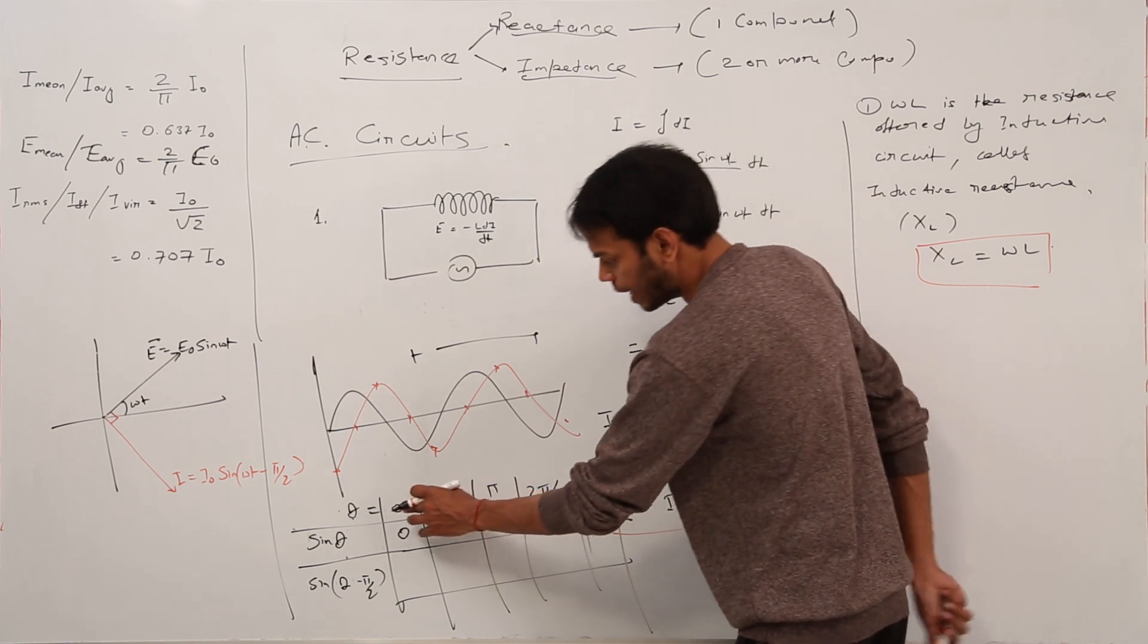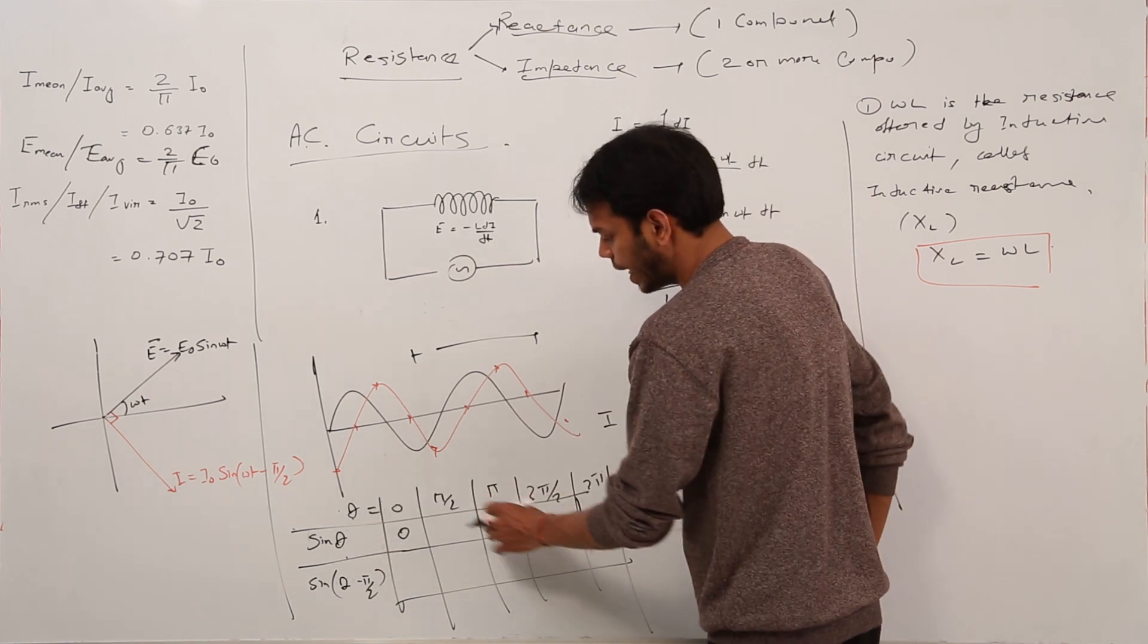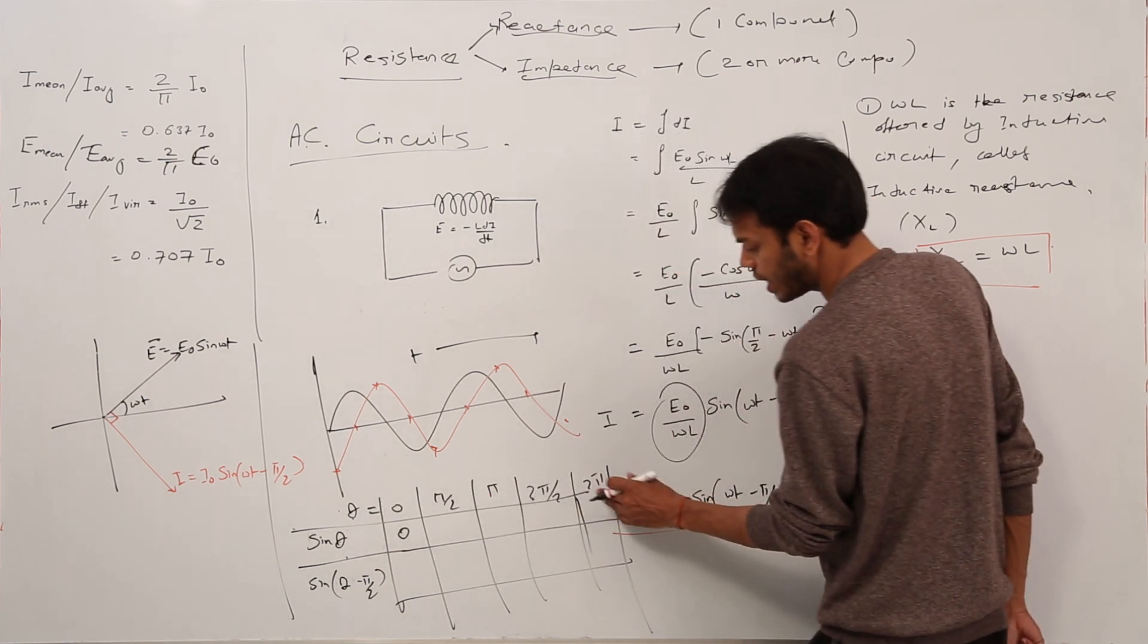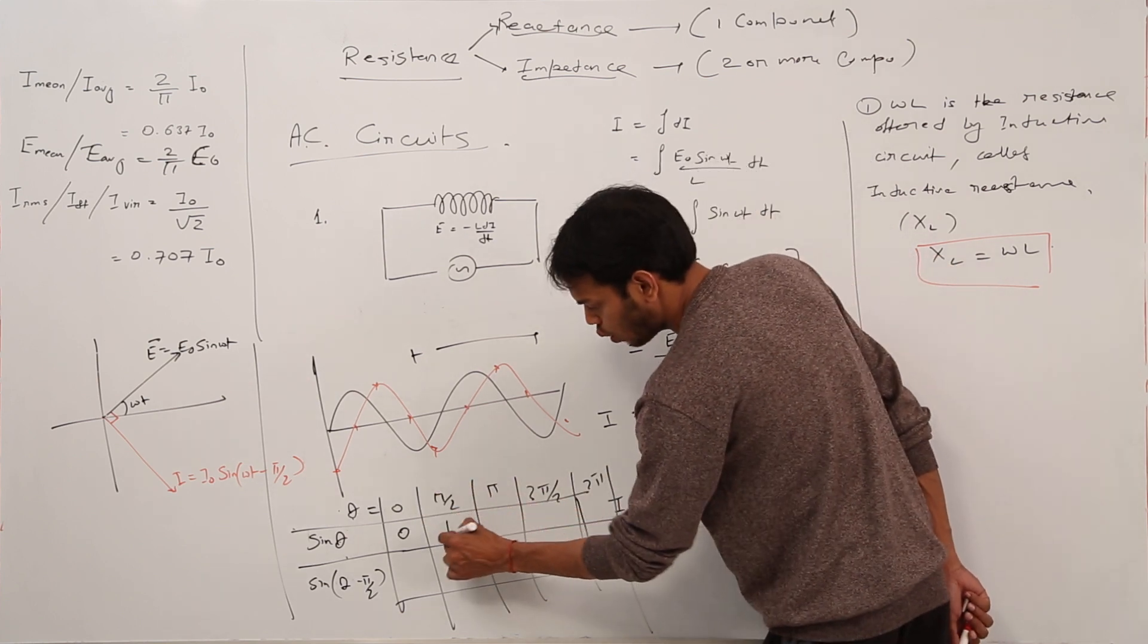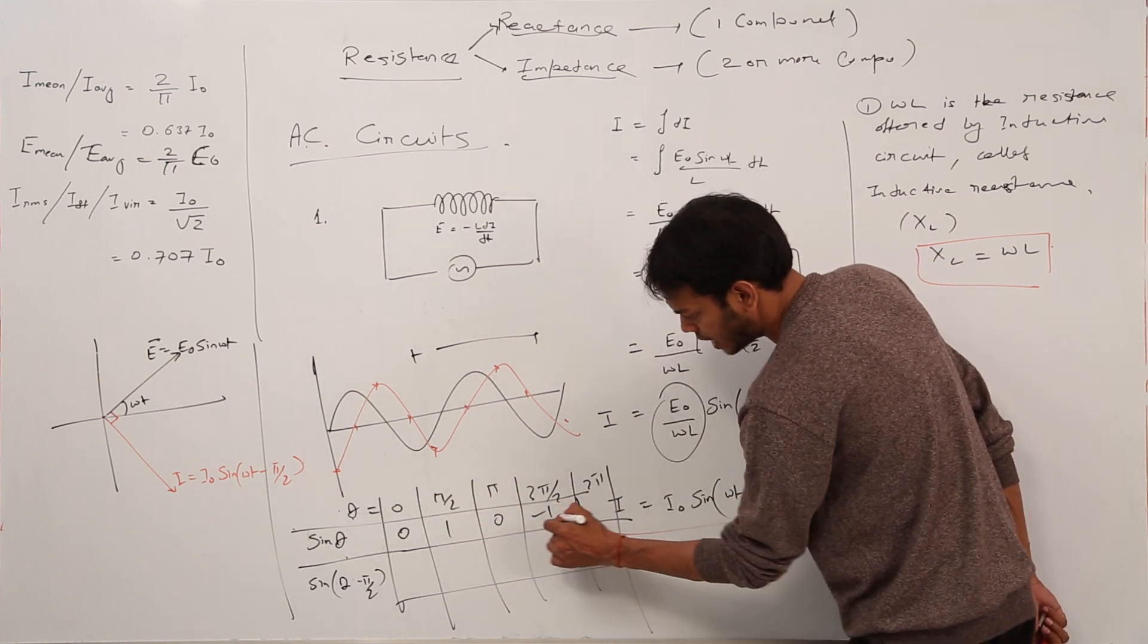Now, look at these values: sin θ, sin 90°, sin 180°, sin 270°, sin 360°. So, 0, 1, 0, -1, 0. These values you know.